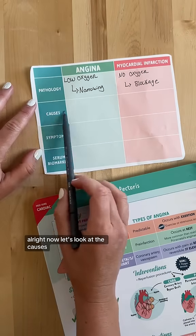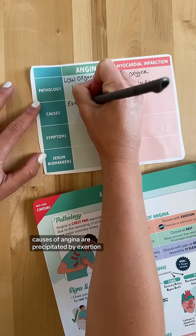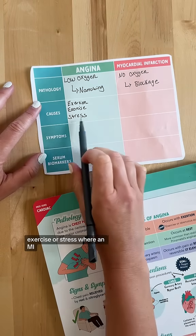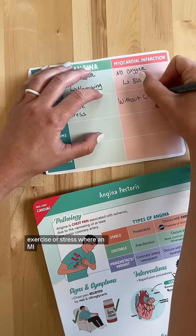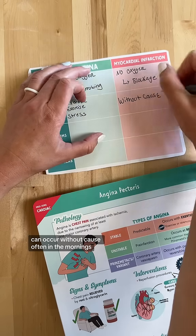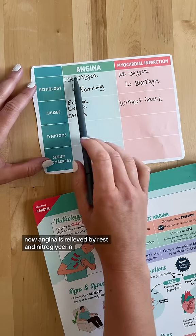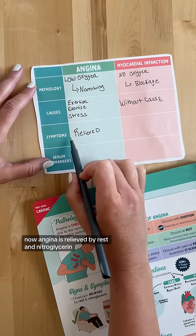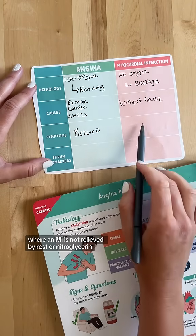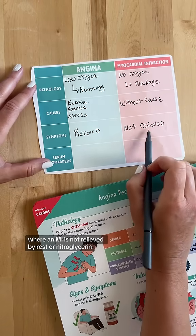Now let's look at the causes. Angina is precipitated by exertion, exercise, or stress, where an MI can occur without cause, often in the mornings. Angina is relieved by rest and nitroglycerin, where an MI is not relieved by rest or nitroglycerin.